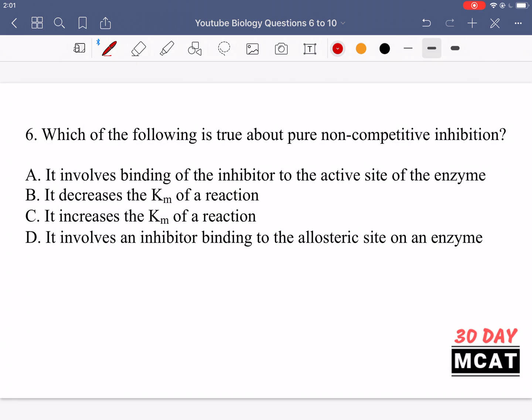Now hopefully you guys had a chance to go through the questions on your own and we can work through them together. Question 6 is asking us which of the following is true about pure non-competitive inhibition. So we're talking about the different ways in which enzymes can be inhibited. If we have non-competitive inhibition, that means that the inhibitor is not binding to where the normal substrate would bind. So it's not binding to the active site of the enzyme. Therefore, it's binding in another site on the enzyme called the allosteric site.